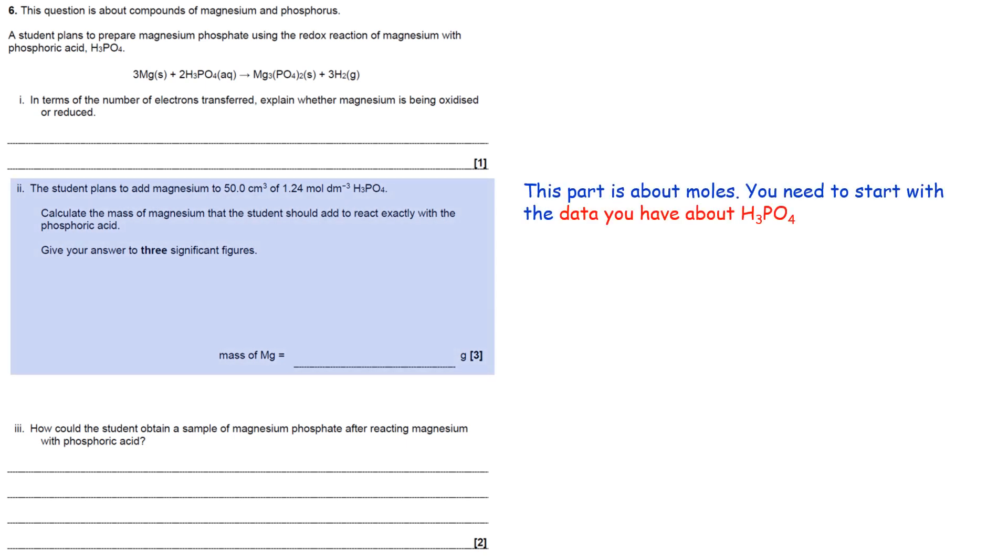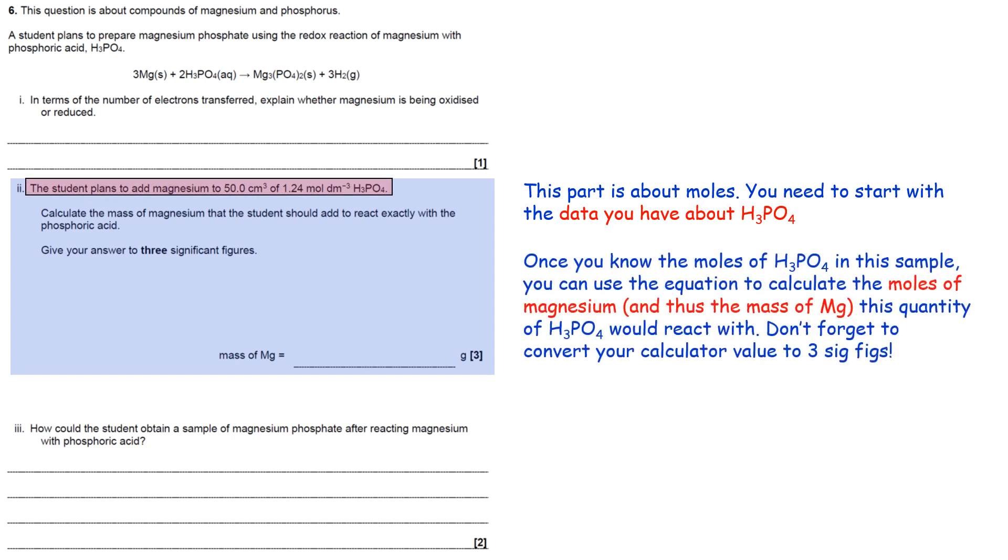The next bit is about moles. You need to start with the data you have about H3PO4. And from there, you can work out the moles of magnesium because there'll be a connection between the two using the equation. So once you've got the moles of magnesium, you can work out the mass of that and then convert your calculator value to three significant figures because that's what it asks you to do.